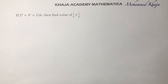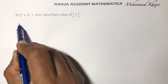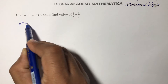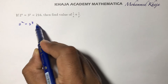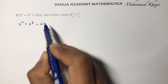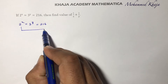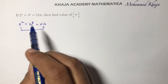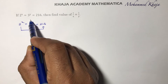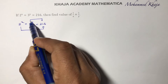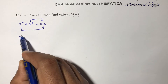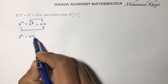If 2 power x equals 3 power y equals 216, then find the value of 1 by x plus 1 by y. So here 2 power x equals 3 power y equals 216. First I'll equate 2 power x with 216 and 3 power y with 216, so 2 power x equals 216 and 3 power y equals 216.